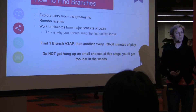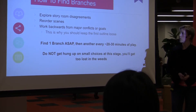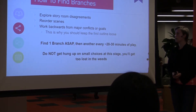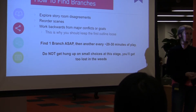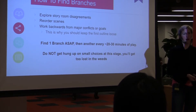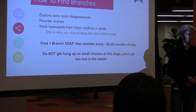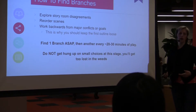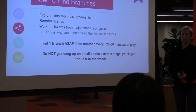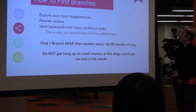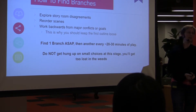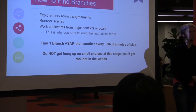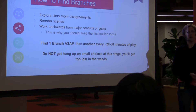For a bit of context on pacing: what we've noticed is you should get one of your first big branches in as soon as possible. This teaches players that their choices matter and sets them up to be aware of the choices they're making. We then do another one — it's pretty good to do one for about every 20 to 30 minutes of gameplay. For us, this means one pretty big branch every three to five episodes.